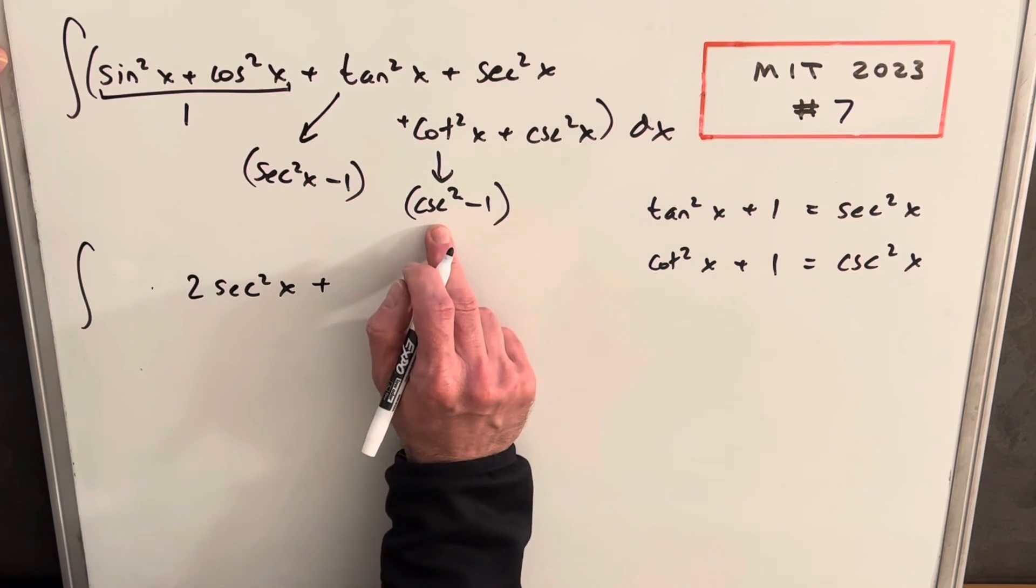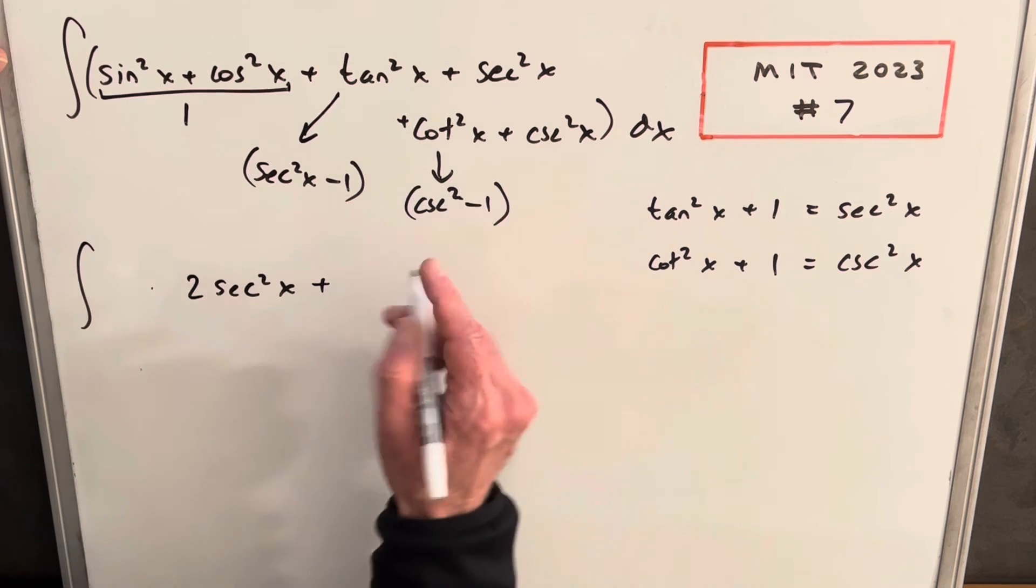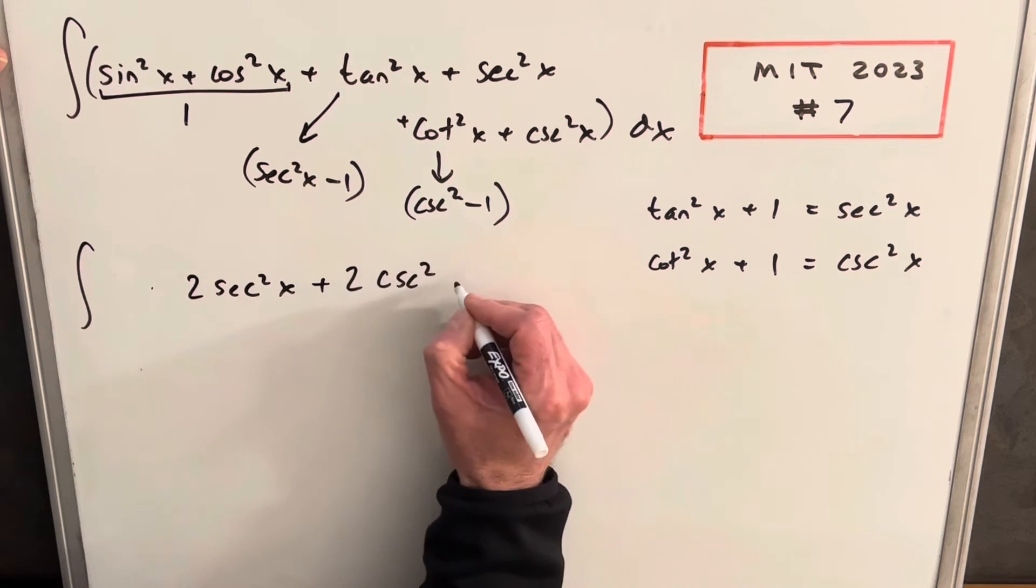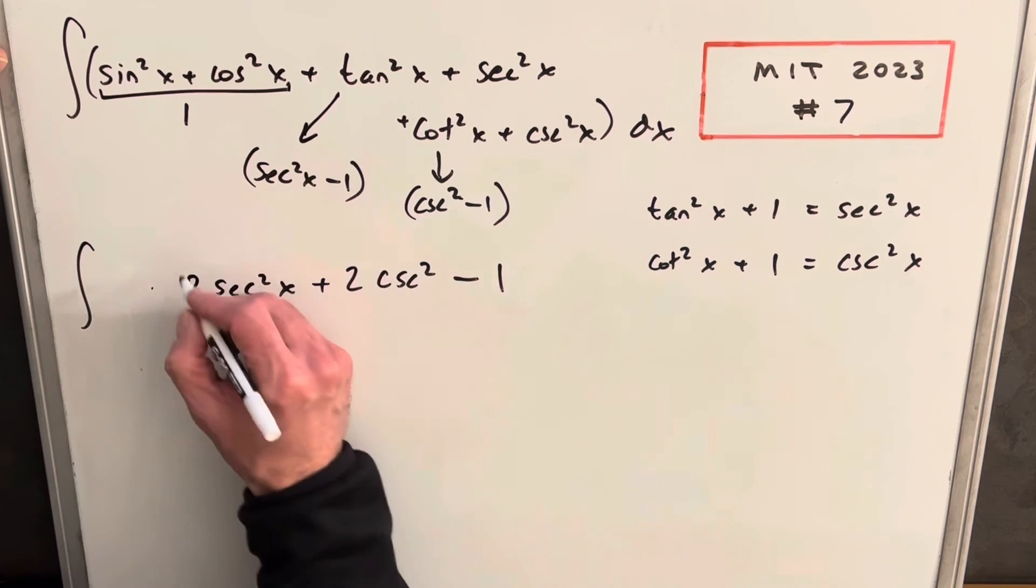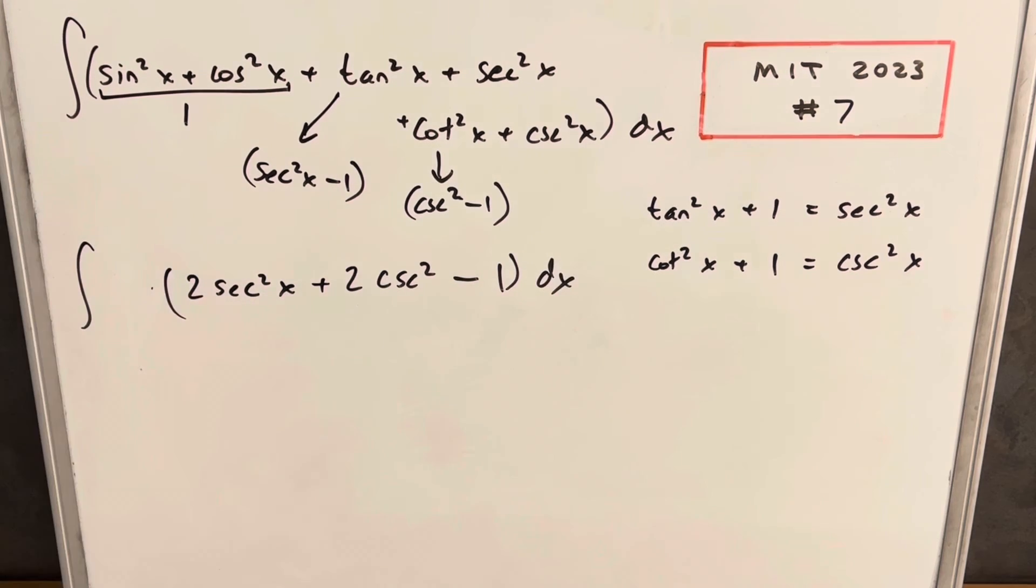Then we're going to have over here, we're going to have this cosecant squared and this cosecant squared is going to give us 2 cosecant squared. And then we're just going to have minus 1 dx.